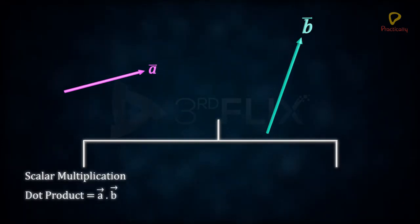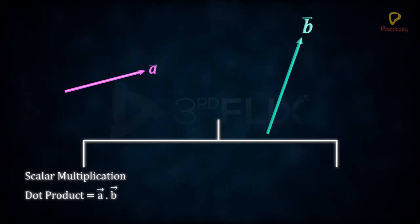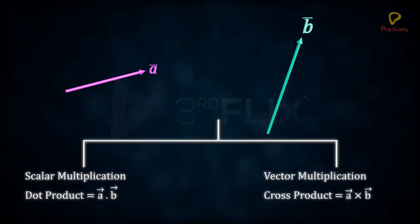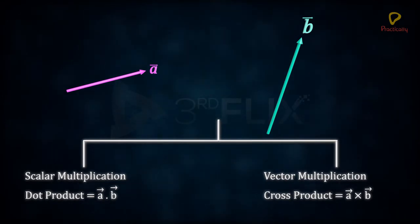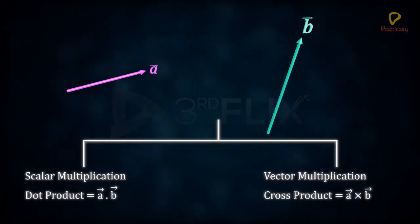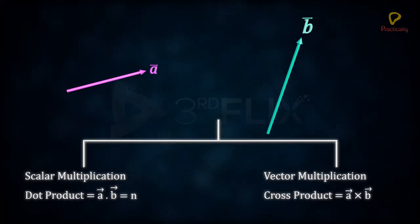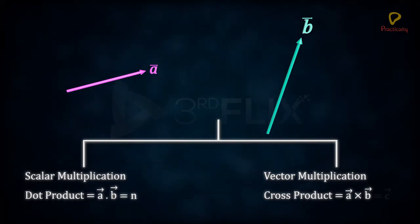The dot product is indicated by placing a dot between the vectors. The other method, called cross product, is represented by placing a cross between the vectors. The dot product results in a scalar, which is a real number, while the cross product of two vectors results in a new vector.